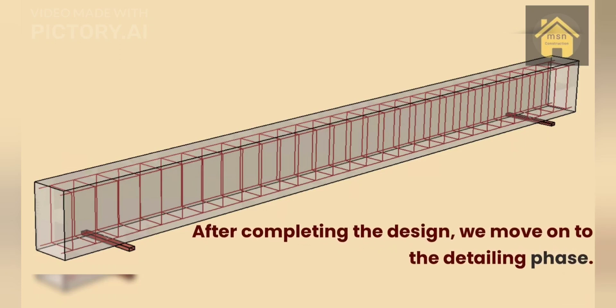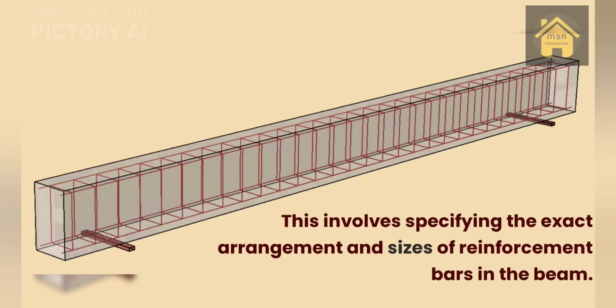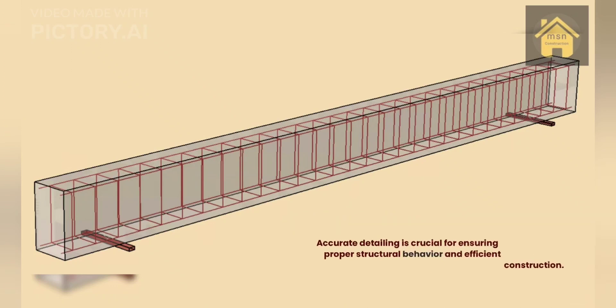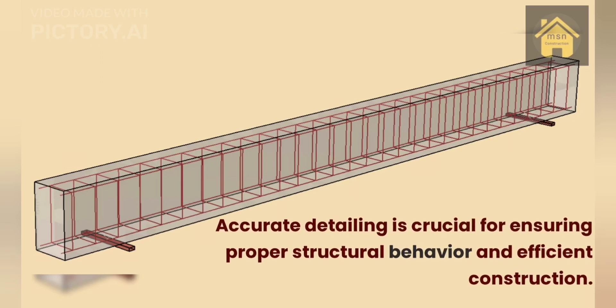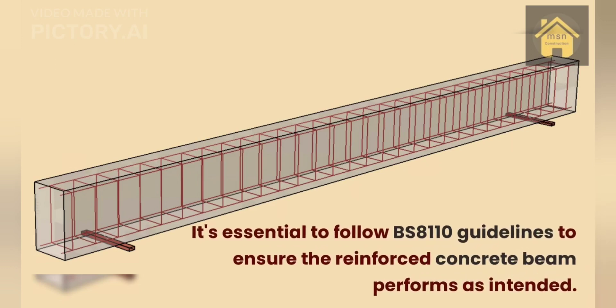Step 6 — Detailing and construction. After completing the design, we move on to the detailing phase. This involves specifying the exact arrangement and sizes of reinforcement bars in the beam. Accurate detailing is crucial for ensuring proper structural behavior and efficient construction. It's essential to follow BS8110 guidelines to ensure the reinforced concrete beam performs as intended.